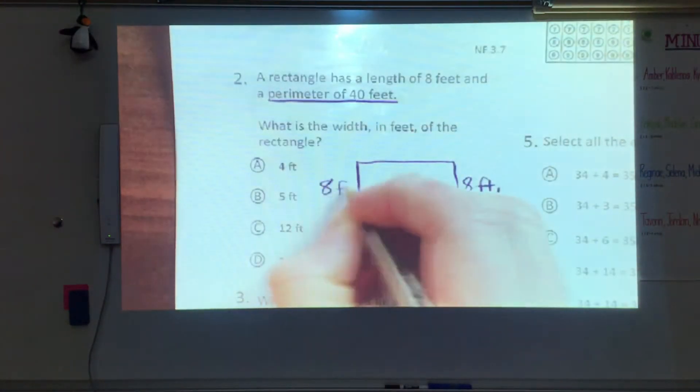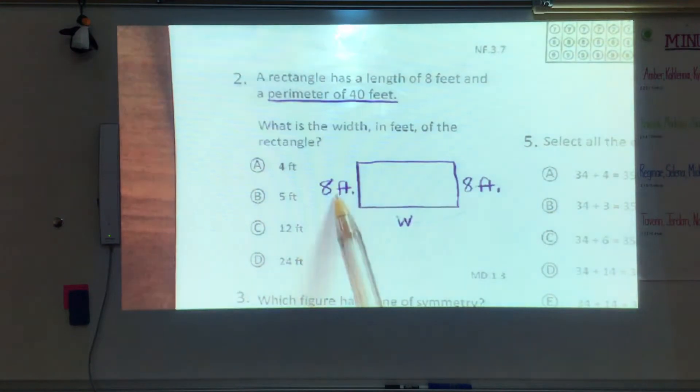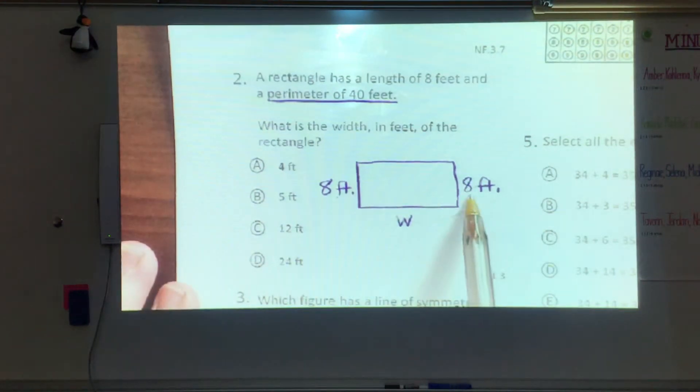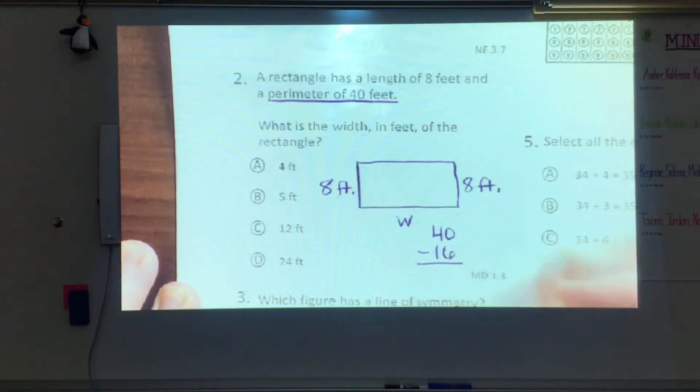Okay, a perimeter of 40 feet. I know this side is 8 feet so when I add those two sides together I have 16. If I take that away from 40 that'll tell me how much I have left. So we're gonna borrow. 10 minus 6 is 4. 3 minus 1 is 2. So we have 24 feet to split between these two sides. So we're gonna divide this by 2. 24 divided by 2.